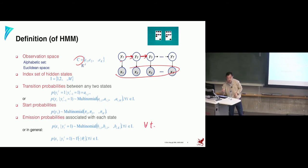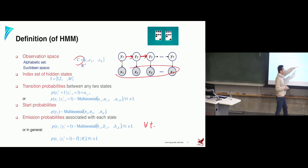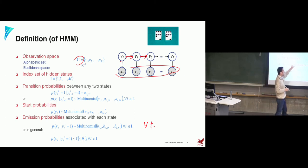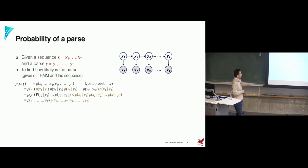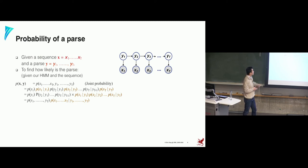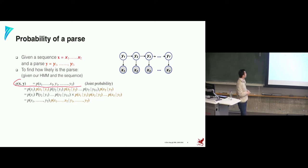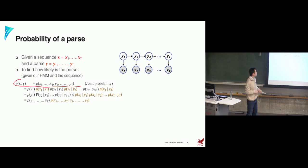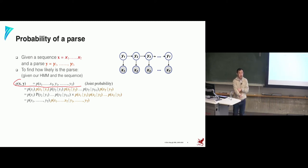One important caveat: the stationarity assumption says that for all time points t, I use the same multinomial transition. This is called stationarity. It could also be non-stationary if you use a different model at every time point, but that's harder to learn. Now, putting it all together following the graphical model factorization law — you multiply all the local pieces — that gives you the joint probability of the observation sequence and the states. Once you have that, you need to worry about inference.